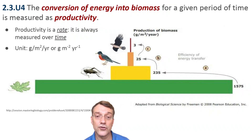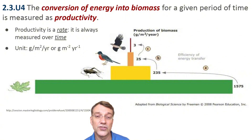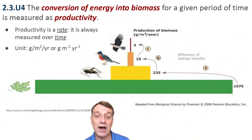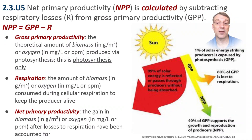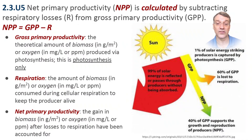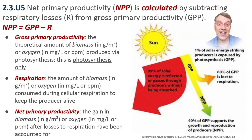Productivity measures the conversion of energy into biomass over time. It's always a rate, typically measured in grams per square meter per year, but sometimes in kilos per hectare per year for terrestrial ecosystems. This diagram shows how biomass decreases at higher trophic levels due to energy losses. The energy used by producers to maintain their living functions is subtracted, and NPP — net primary productivity — is what remains.